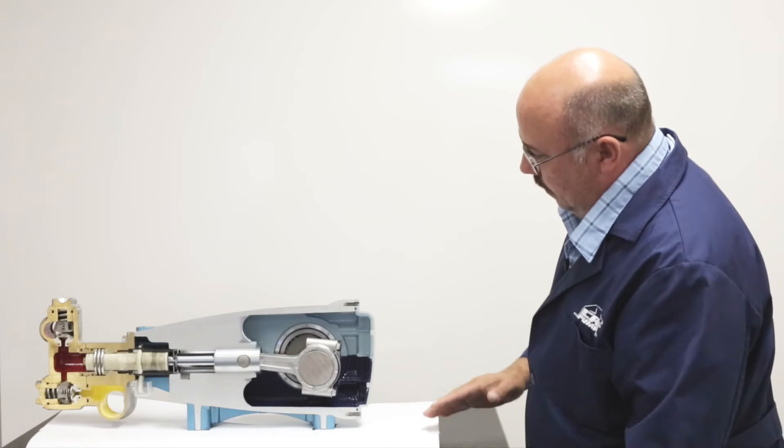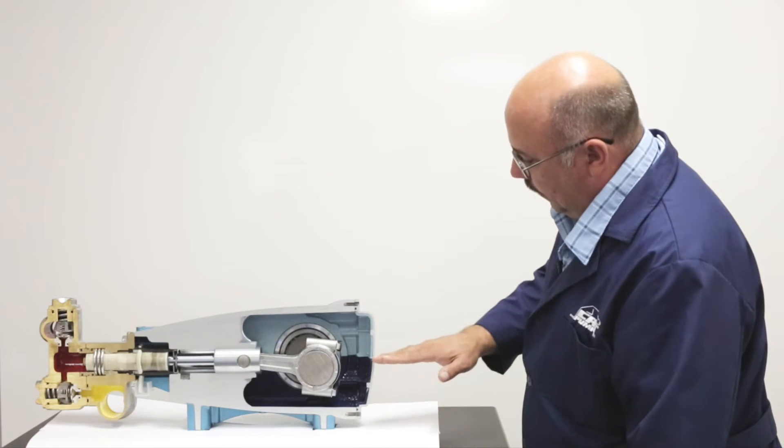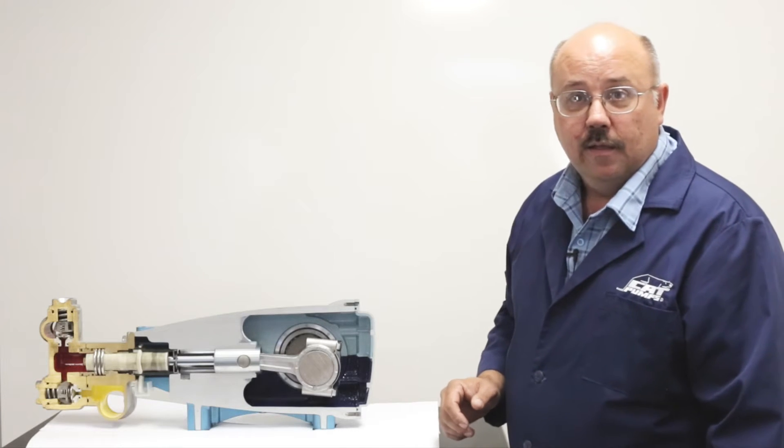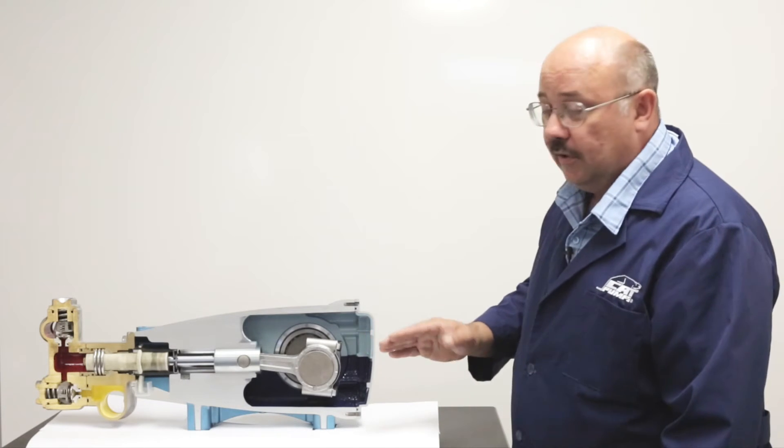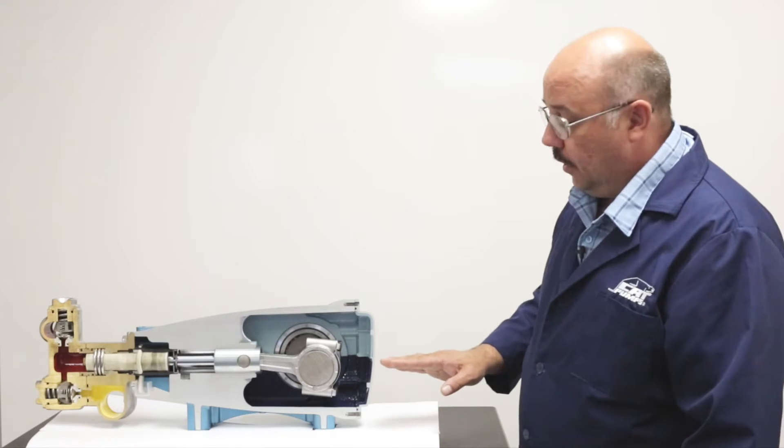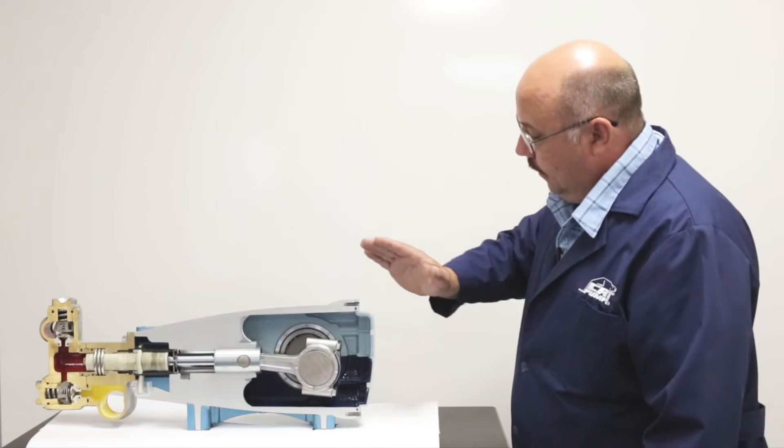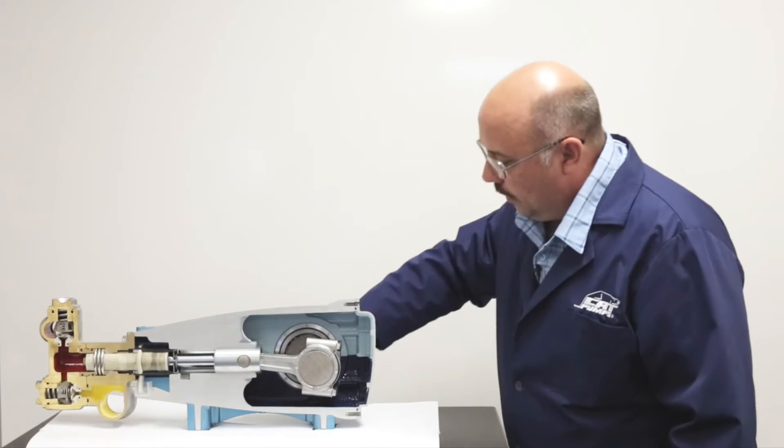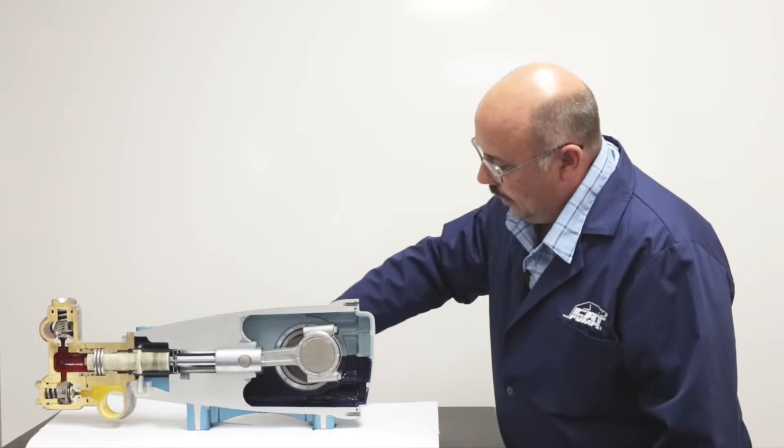Once we get our pump ready to run and we fill it up to here with Cat Pumps oil, which is specially formulated to work with our materials of construction and the loading to give optimal lubrication for all the parts, it's filled up halfway on a bubble gauge or the dipstick, and then we start running our pump and we'll have a motor or something that turns the crankshaft.